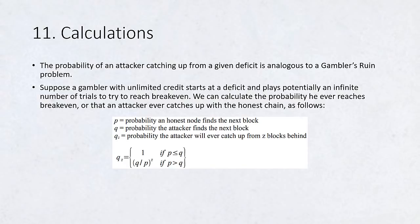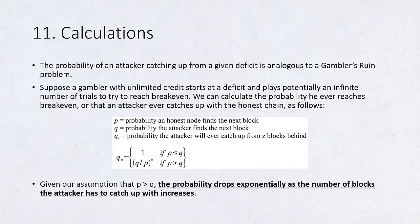Let P equal the probability an honest node finds the next block. Let Q equal the probability the attacker finds the next block. Let Q_z equal the probability the attacker will ever catch up from Z blocks behind. Then Q_z equals 1 if P is less than or equal to Q, and (Q/P)^Z if P is greater than Q. Given our assumption that P is greater than Q, the probability drops exponentially as the number of blocks the attacker has to catch up with increases. With the odds against him, if he doesn't make a lucky lunge forward early on, his chances become vanishingly small as he falls further behind.